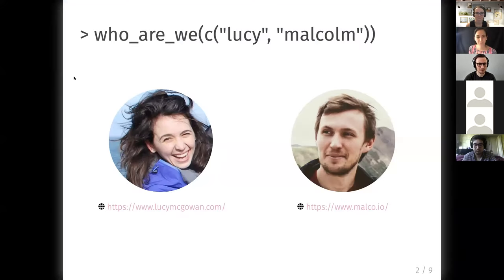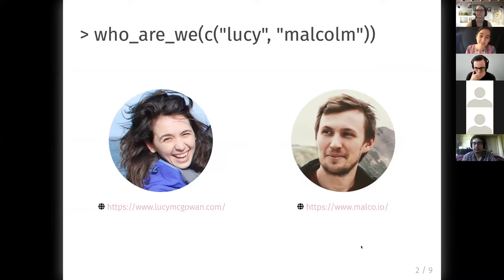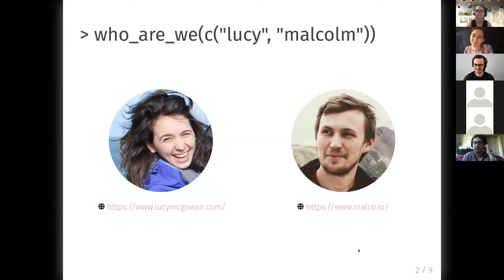I'm Lucy D'Agostino McGowan. I'm an assistant professor at Wake Forest University in North Carolina in the mathematics and statistics department. My research and training is in biostatistics and I do a lot of causal inference work, in particular with propensity scores, propensity score weighting, and related methods. I also have a podcast called Casual Inference that talks about causal inference techniques in a friendly way for a lay audience.